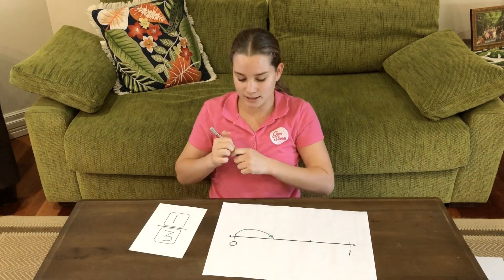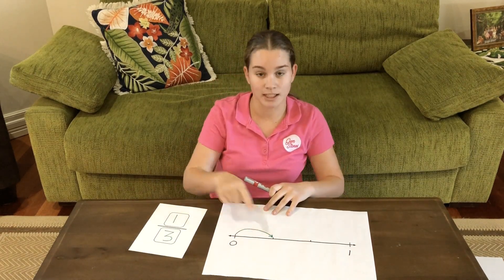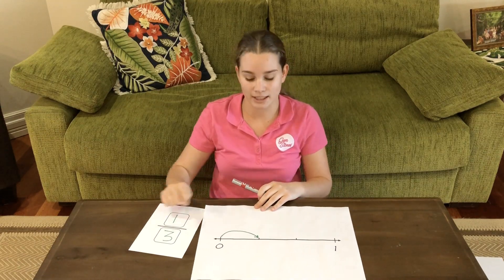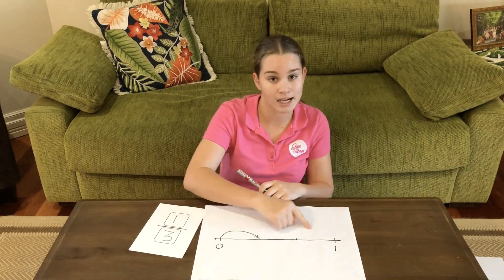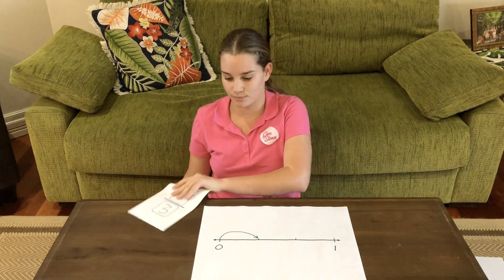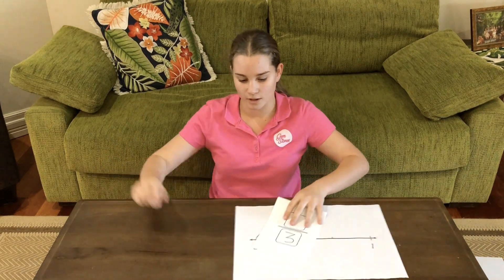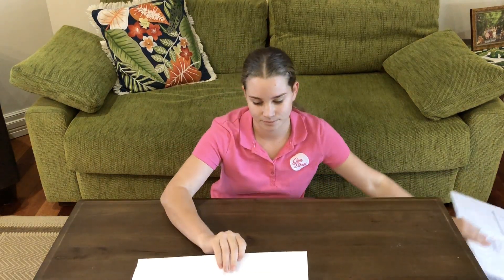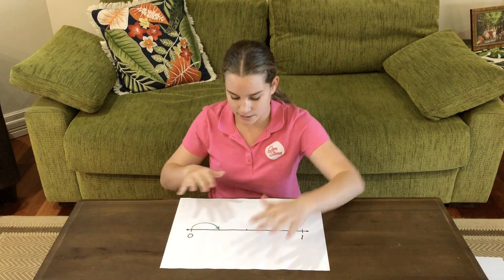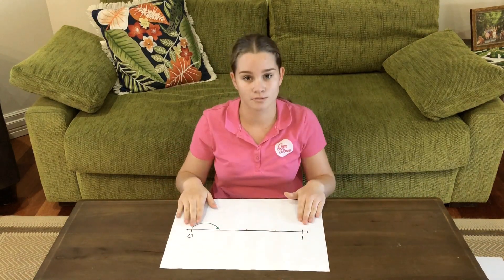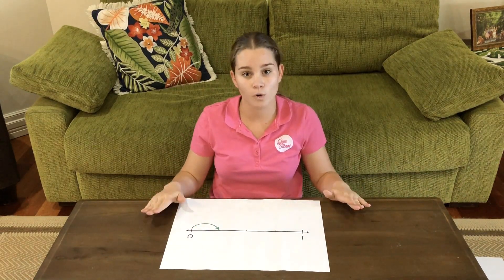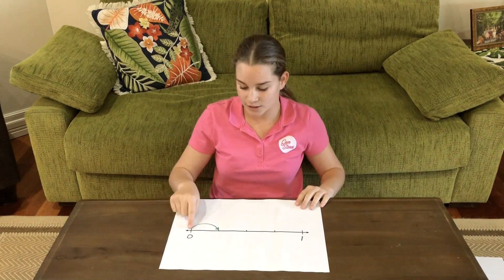Let's try to write that. We have done one jump of three. The first box shows us how many jumps we've done, and the second box tells us how many equal parts there are in a whole.